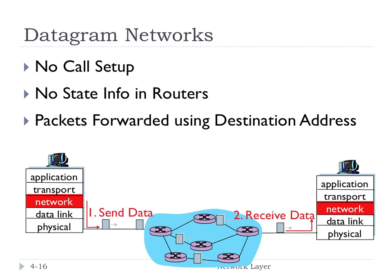You send the data, you receive the data. What's the downside to this as opposed to the VC model? You've lost guarantees. You've lost any kind of resource reservation — none of that's going on. If there's congestion, you might just lose packets because the router has a full buffer. Additionally, packets from one source to the same destination can be considered in the same flow. Since they take different routes, they might get out of order, and that's why IP doesn't provide in-order delivery guarantees.